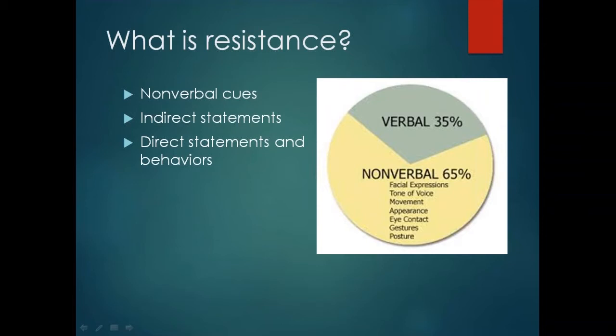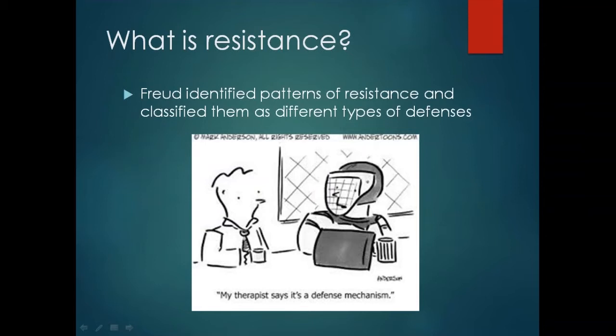According to experts in CBT, nonverbal cues and indirect statements may be attended to by consistently eliciting feedback from clients regarding your interventions and checking in with what they perceive. For instance, you can ask if they're having a reaction to something you said or if something bothered them, or ask the client to put their confusion into their own words. By doing this, therapists uncover problems by listening, responding directly to needs, and soliciting feedback. Within this presentation, we'll continue to consider the direct statements and behaviors that clients use to manifest resistance.